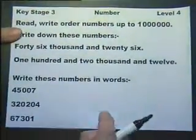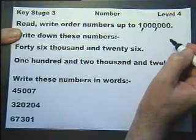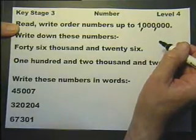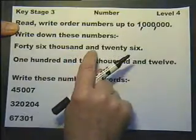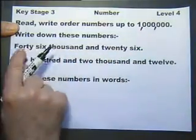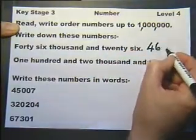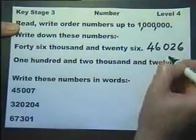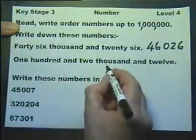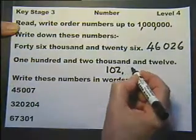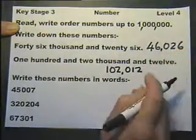Read, write and order numbers up to one million. So we need to be able to write them and read them and put them in order. Just for example, read this number and then write it using digits. Forty-six thousand and twenty-six: 46,026. One hundred and two thousand: one hundred and two thousand. So I need three noughts there, and twelve, so I need one nought and a one and a two. So we don't put commas in those places now, just leave a little gap.